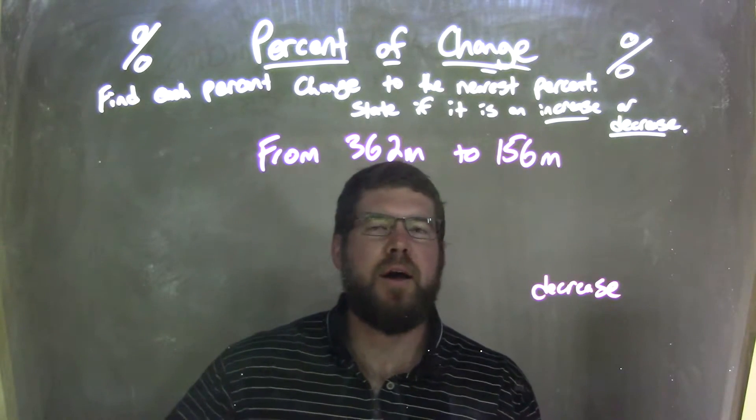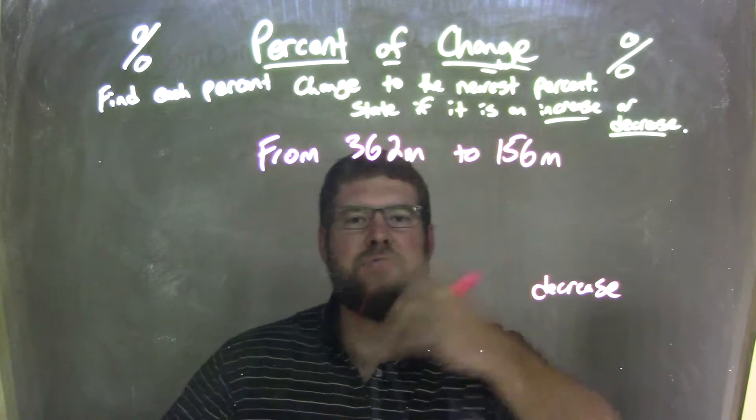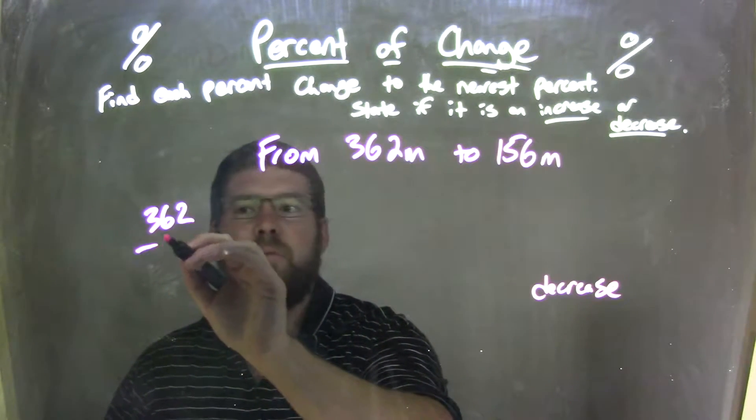Then I need to see how much of a decrease. Well, let's go subtract, we take the large number, subtract by the smaller number, so 362 minus 156.